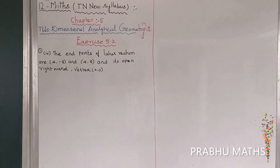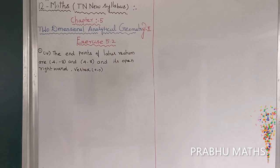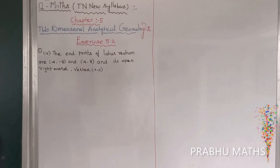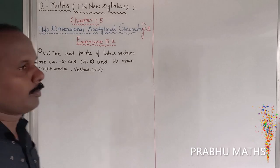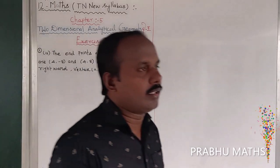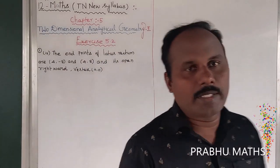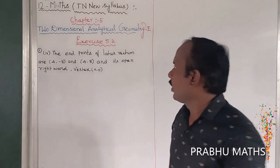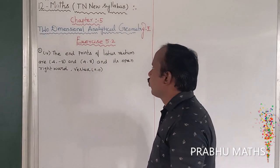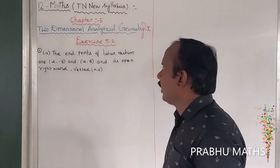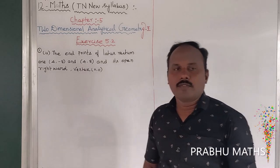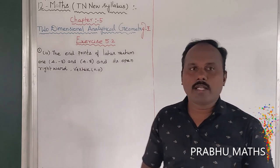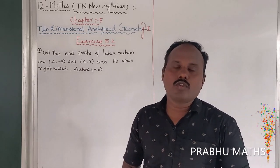This is the 4th subdivision. The endpoints of the latus rectum are (4, -8) and (4, 8). The parabola is open rightward and the vertex is (0, 0).